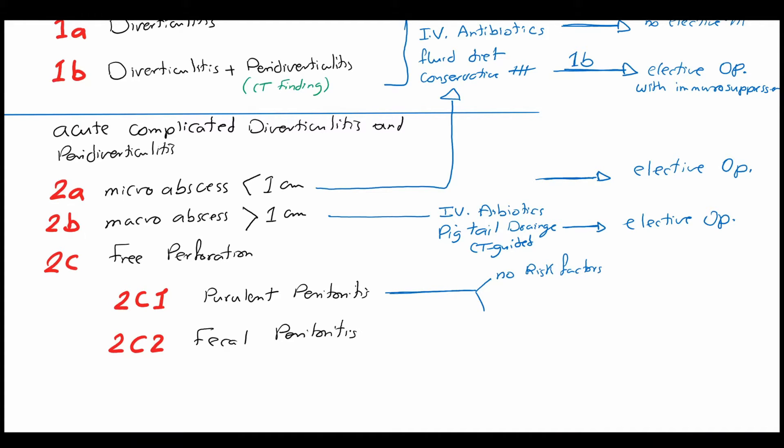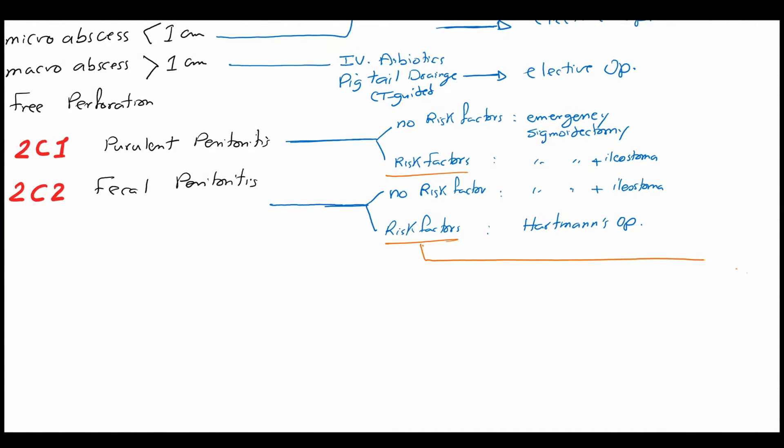In purulent peritonitis with no risk factors, the treatment of choice is emergency sigmoidectomy. With risk factors, it's emergency sigmoidectomy with covering ileostomy. In cases of fecal peritonitis with no risk factors, sigmoidectomy with covering ileostomy. With risk factors, it's a Hartmann operation.